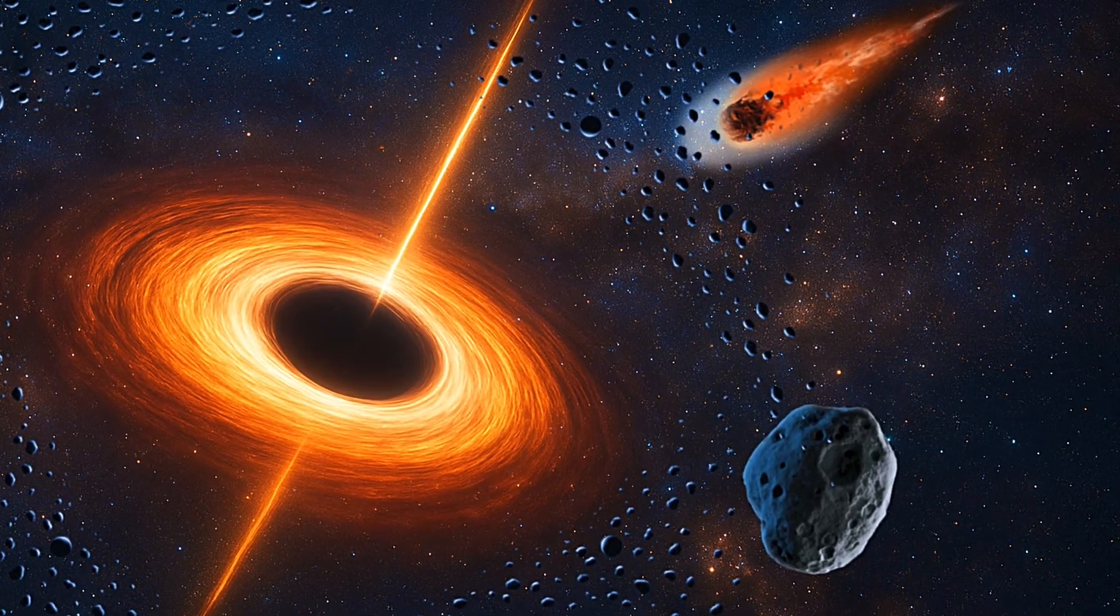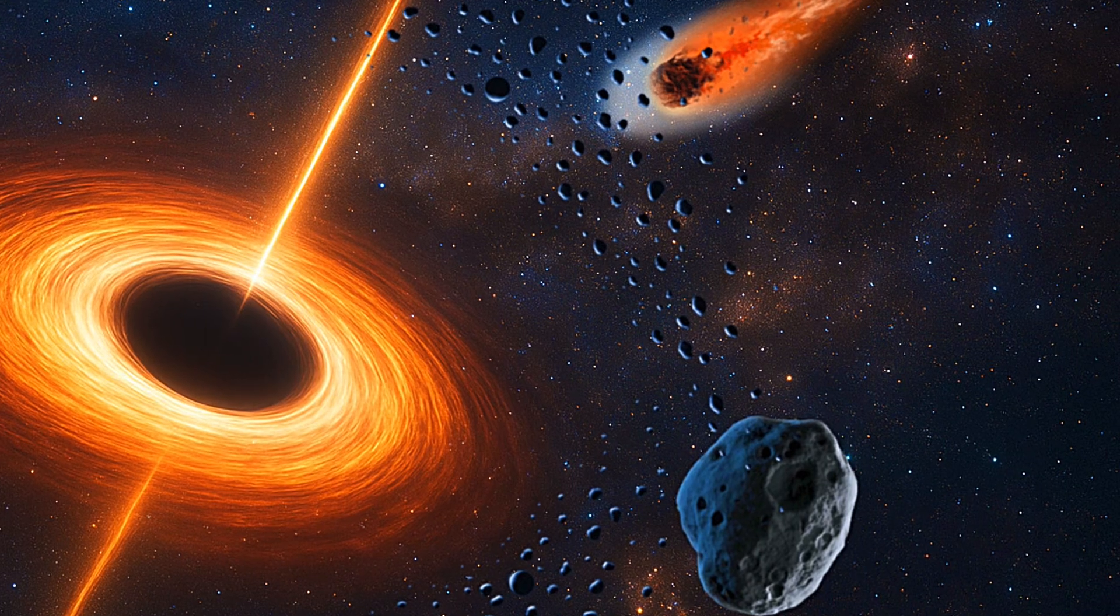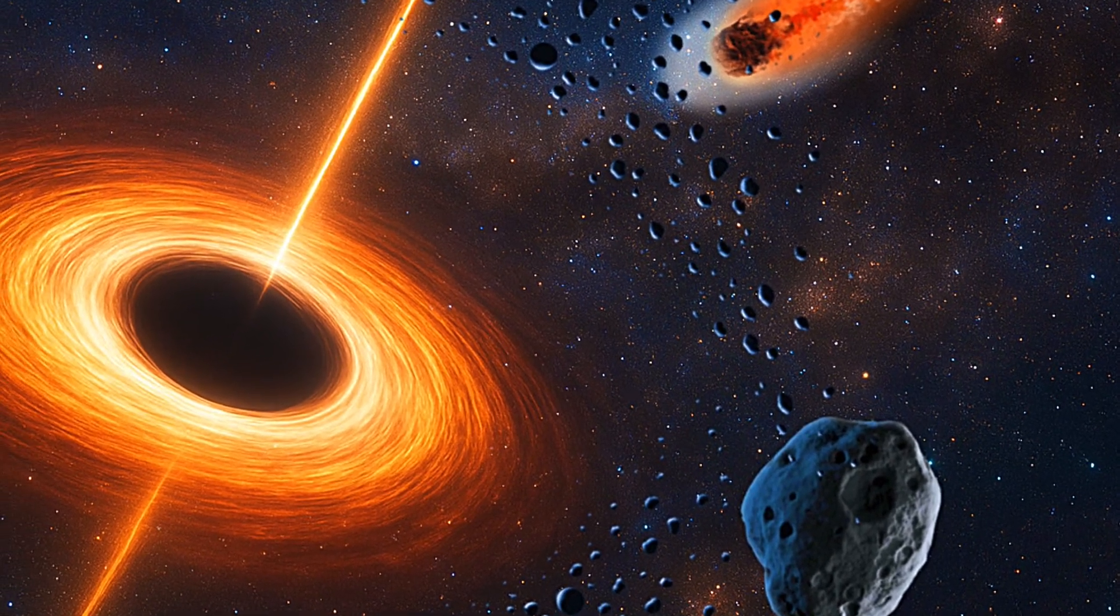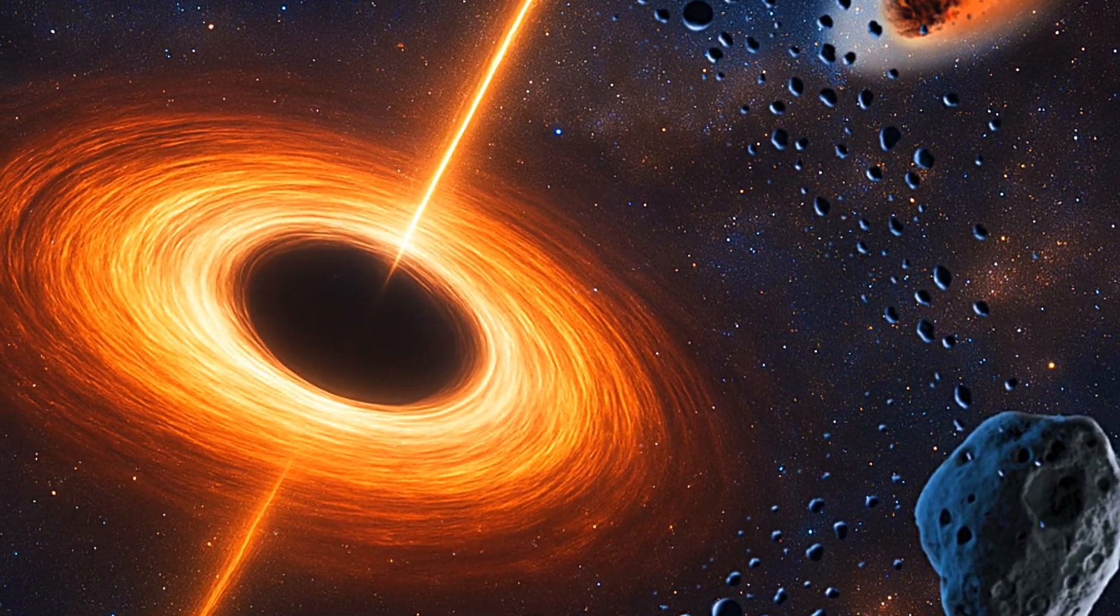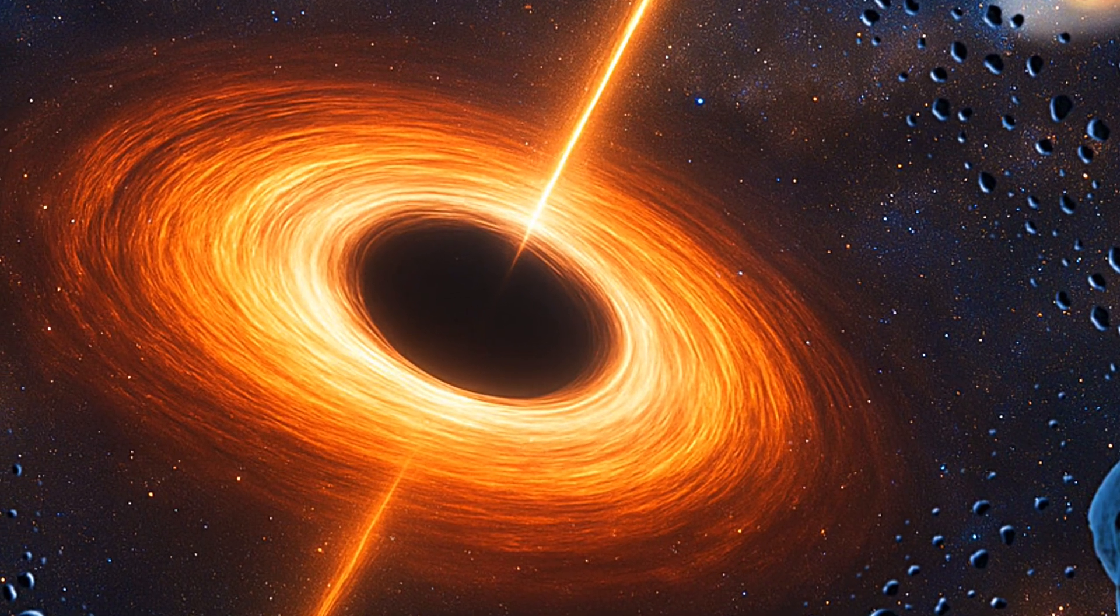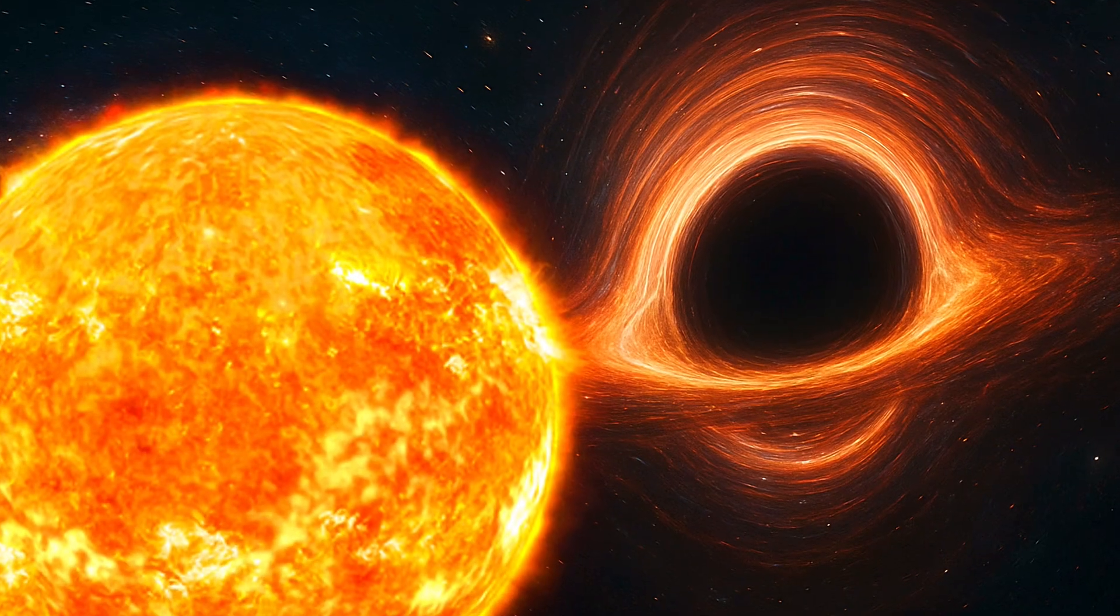Time itself is also distorted near a black hole. If an astronaut were to approach the event horizon, a distant observer would see their time slow to a crawl. To the outside world, it would appear as if time had nearly frozen.